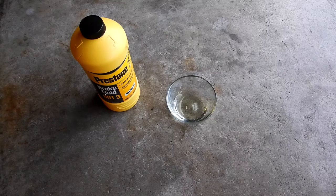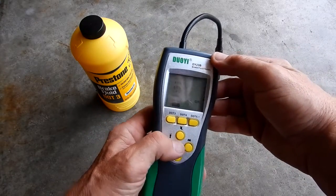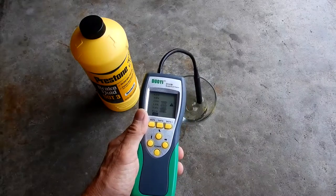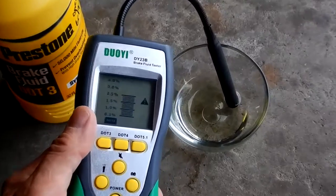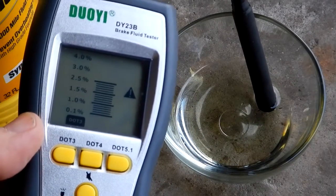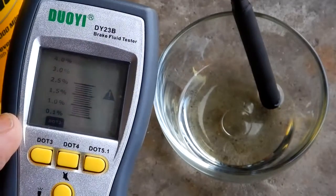So let's check this. I've got it set to DOT 3. And as you can see, we are at about 2.5% moisture.